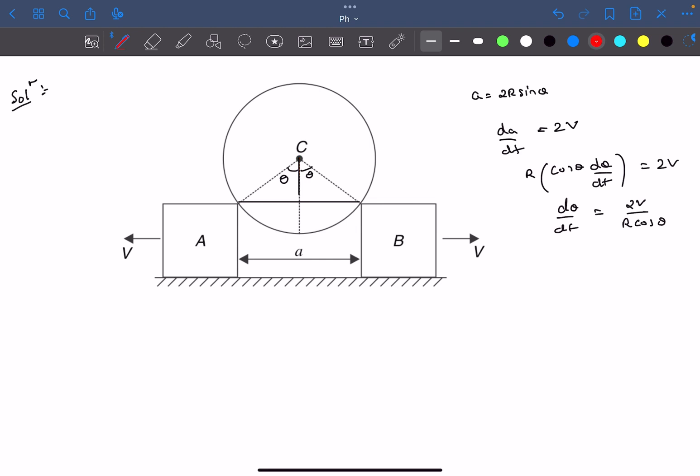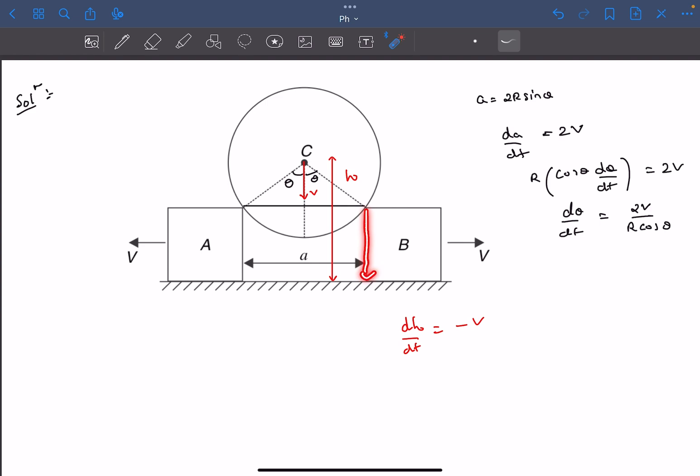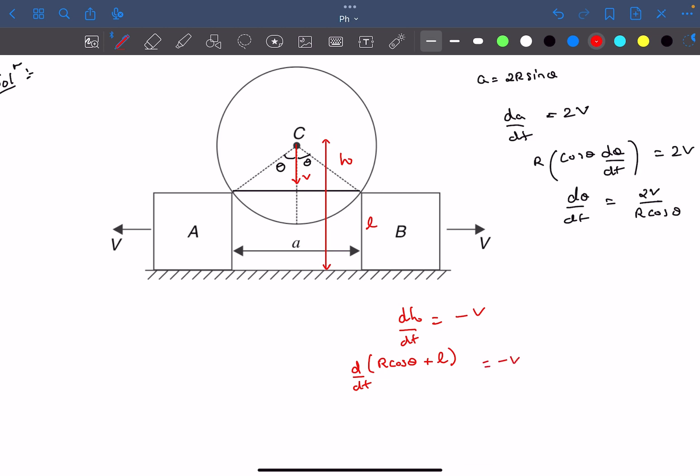Now let's say the velocity of the sphere is some V downwards. We need to write the position of the center relative to some fixed origin. Let's say the distance of the center from this point on the ground is H. We can clearly say dH by dt equals minus V. Now let's try to express H in terms of theta. If the side length of this block is some L and we add R cos theta to L, that would equal H.